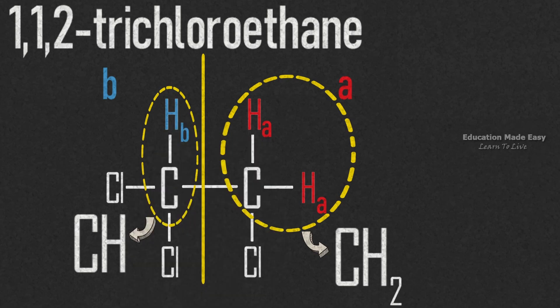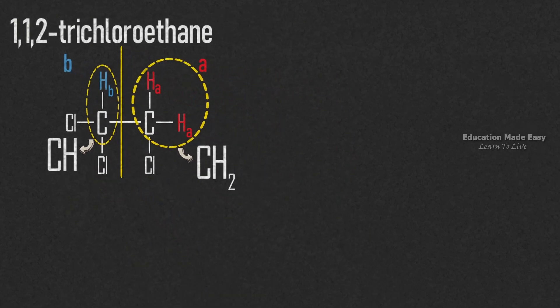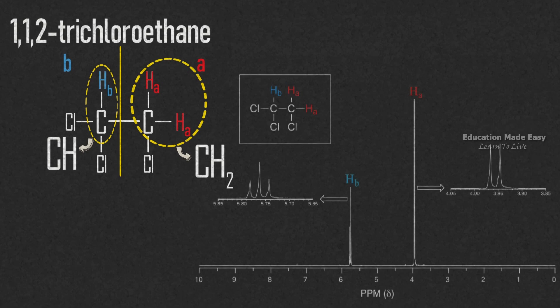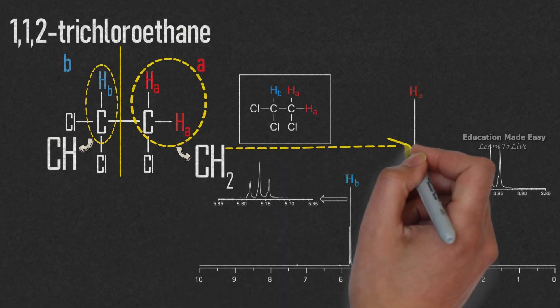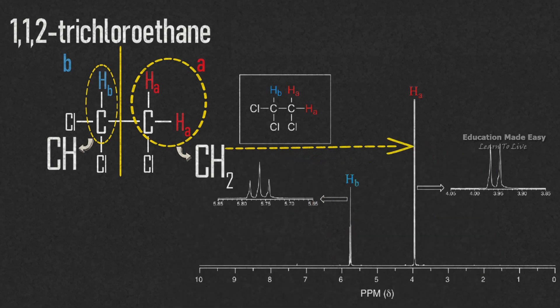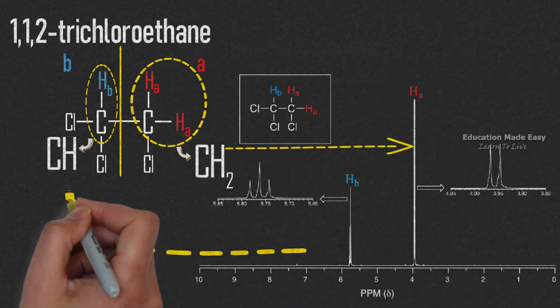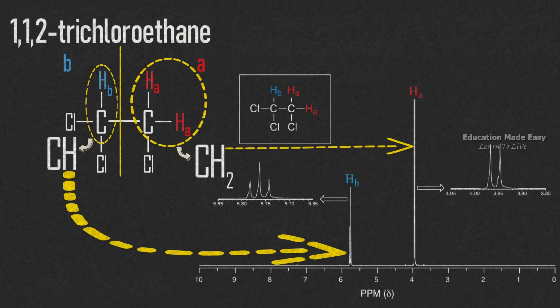The chemical shift diagram of 1,1,2-trichloroethane is shown here. The signal marked as Ha corresponds to CH2 proton and the signal marked as Hb corresponds to CH proton.